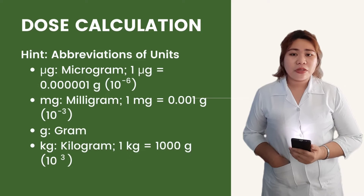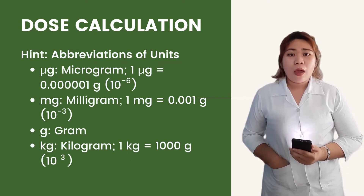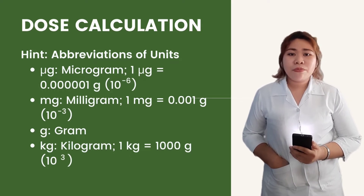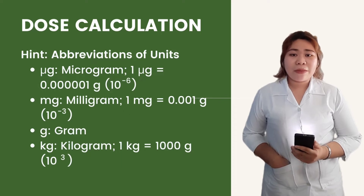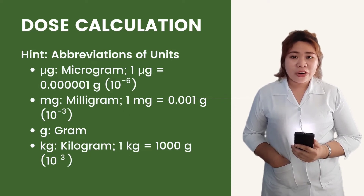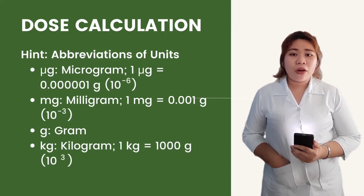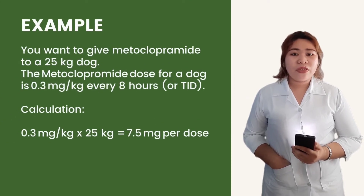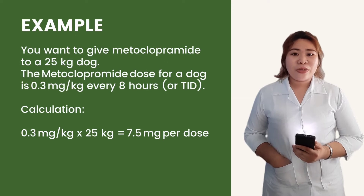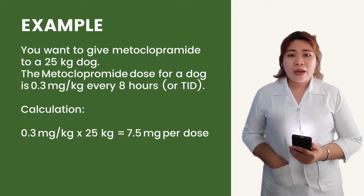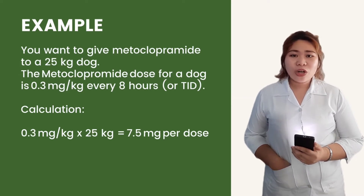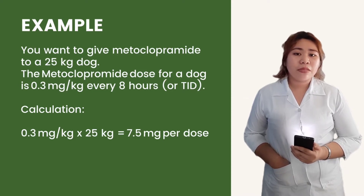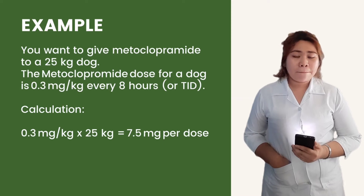1 kilogram is equal to 1,000 grams, or 10 to the power of 3 grams. Most medications in veterinary medicine are dosed on a gram per kilogram, milligram per kilogram, or microgram per kilogram scale. That means a gram, milligram, or microgram of the drug is given for each kilogram of the animal's body weight. For example, you want to give metoclopramide to a 25 kilogram dog. The metoclopramide dose for a dog is 0.3 milligram per kilogram every 8 hours, or TID. To calculate, we multiply 0.3 mg/kg by 25 kilograms, which results in 7.5 milligram per dose.